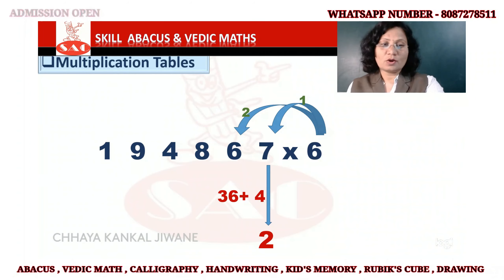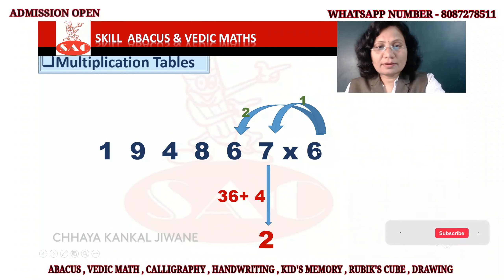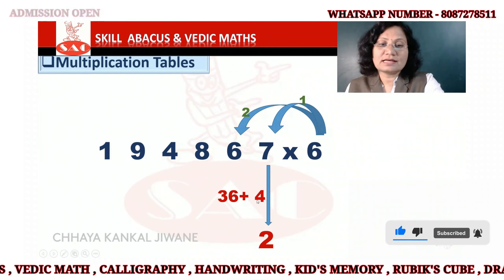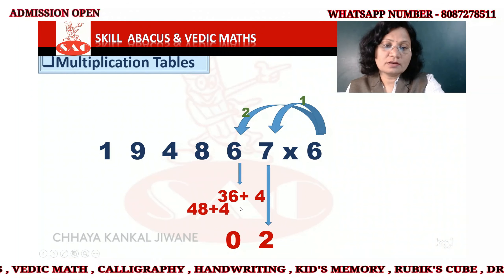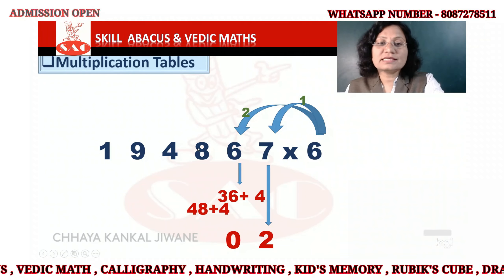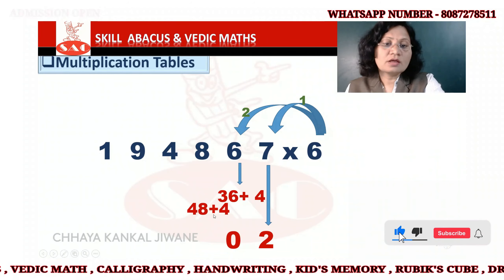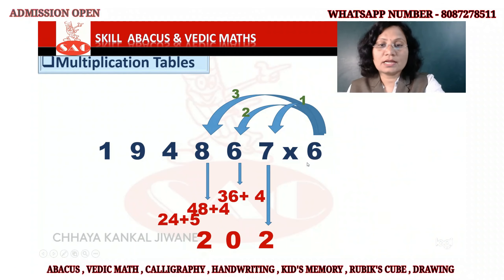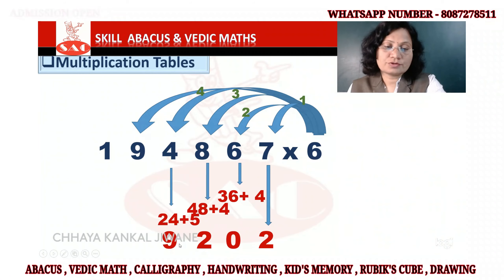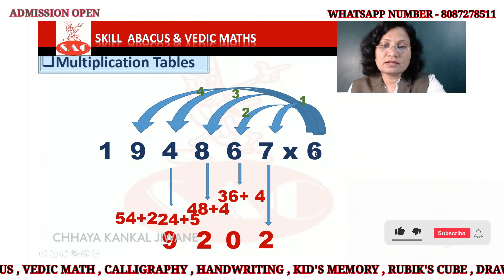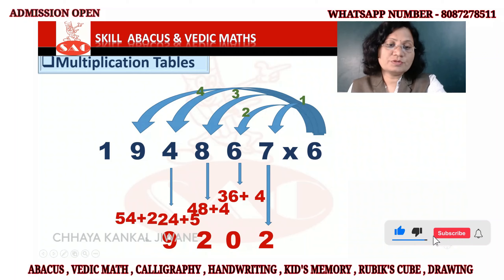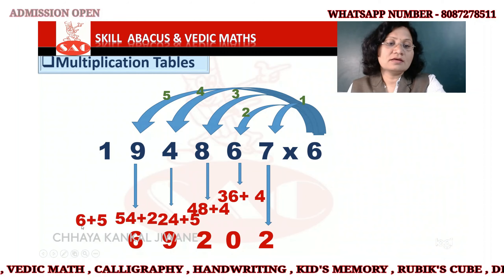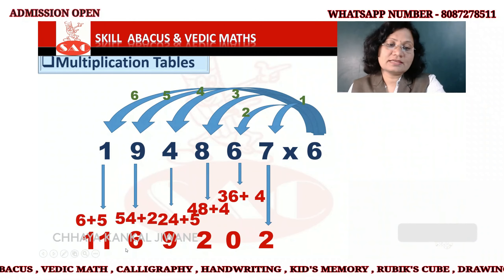It is very easy — let me explain it once again. 6 × 7 = 42, 2 here, 4 is the remainder. 6 × 6 = 36, plus 4 = 40, 0 here, 4 is the remainder. 6 × 8 = 48, plus 4 = 52, 2 here, 5 is the remainder. 6 × 4 = 24, plus 5 = 29, 9 here, 2 is the remainder. 6 × 9 = 54, plus 2 = 56, 6 here, 5 is the remainder. 6 × 1 = 6, plus 5 = 11, write 1. Answer is 2 7 6 9 2 0 2.